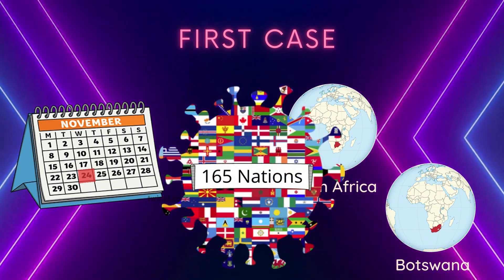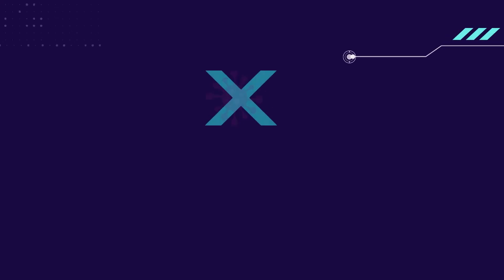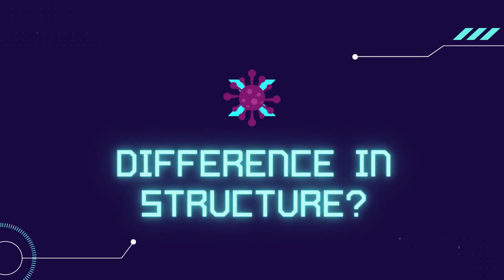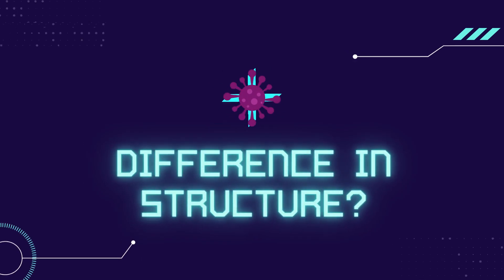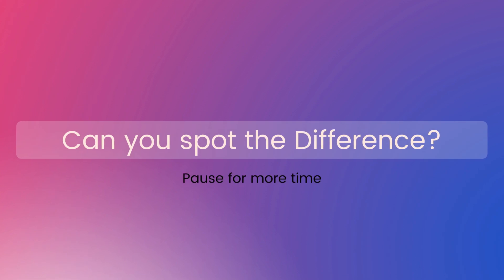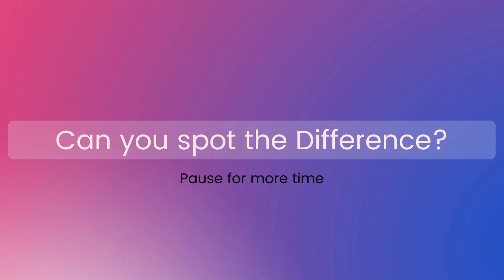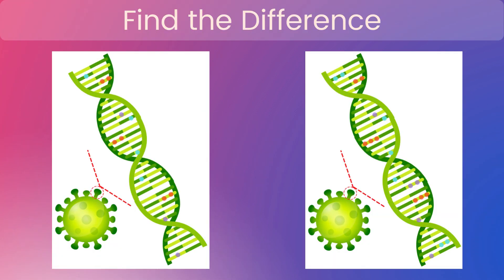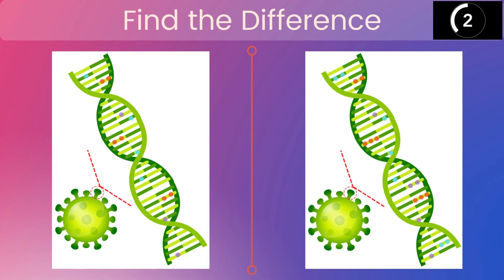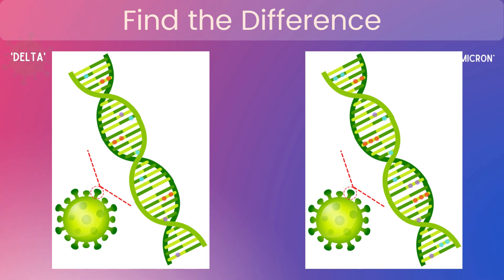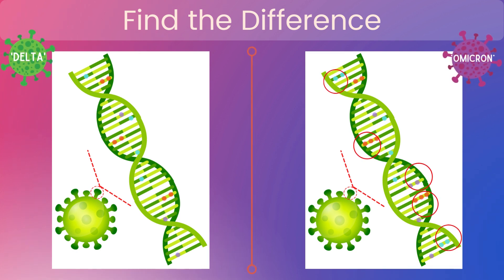The first Omicron variant was detected in South Africa and Botswana, but has now spread to over 165 nations. Now let's investigate the structural differences between Omicron and Delta. We can see that the Omicron variant has more mutations than the Delta one.